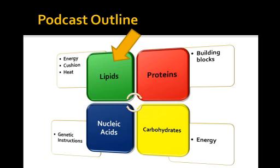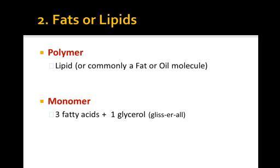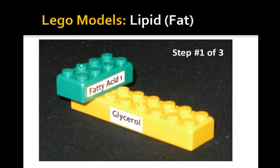Here are lipids. Lipids are the fats in our bodies and they do three jobs: they are energy molecules, they act like bumpers around our major organs — similar to packing peanuts protecting fragile glassware — and they help conserve heat. The polymer name is a lipid, sometimes called a fat or oil. Breaking it down, the monomers are three fatty acids and one glycerol, connecting in that fashion in a three-to-one ratio.